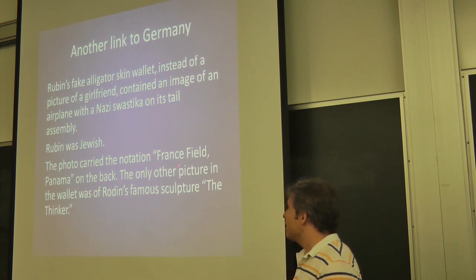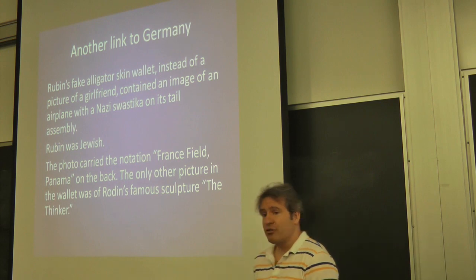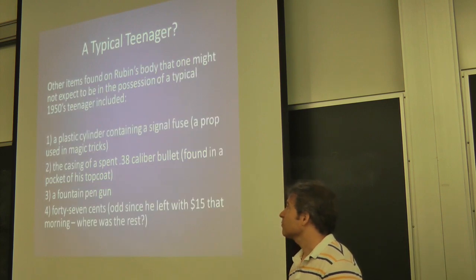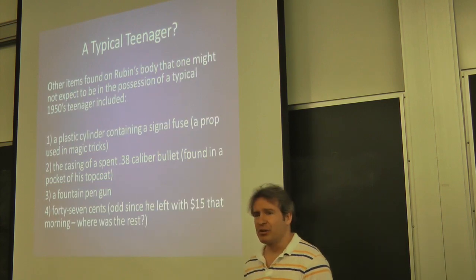It contained a notation on the back. France, field, Panama. The only other picture in his wallet was of this famous sculpture, The Thinker. I don't know if that's significant or not. So is this guy a typical teenager? What else does he have on him?